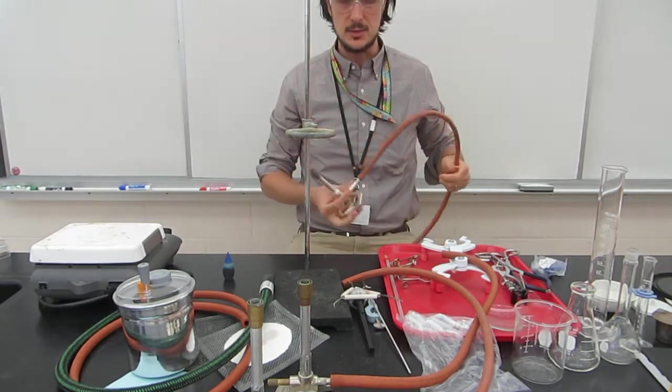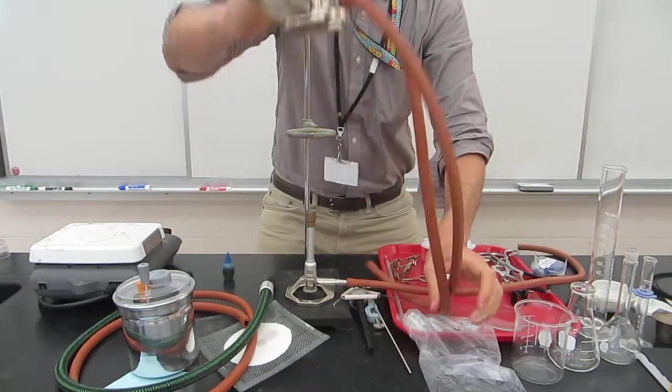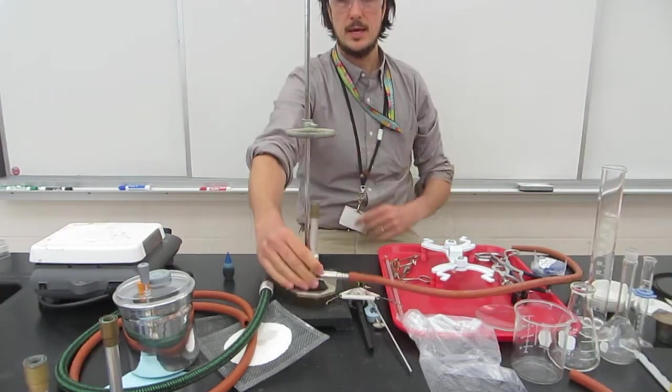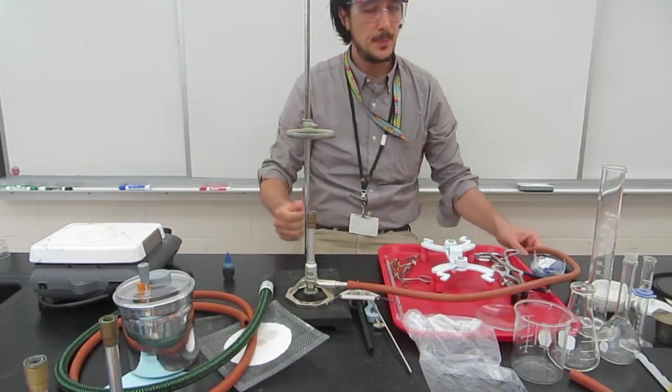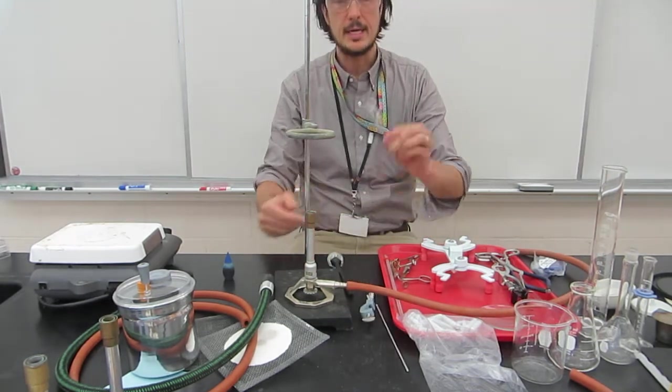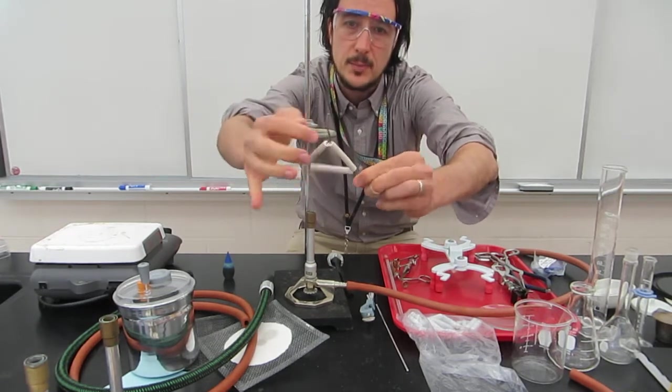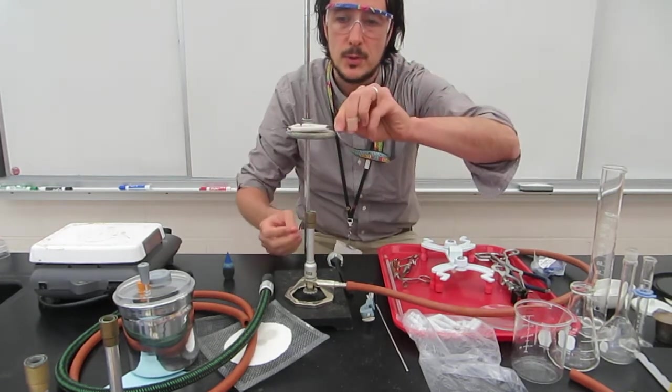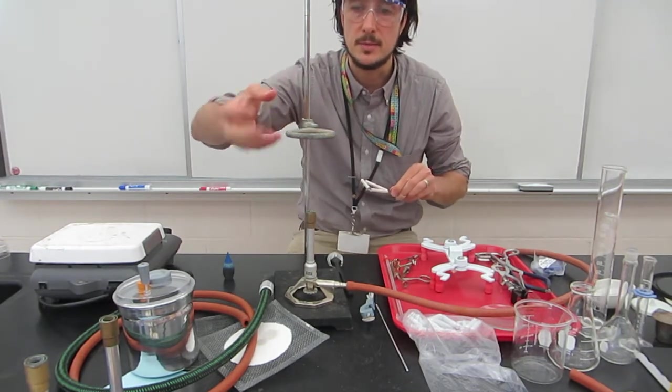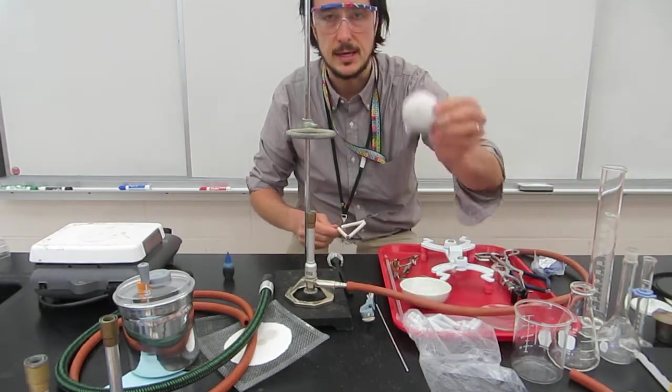These are some different Bunsen burner designs or gas burner designs. Let's say you had it set up, you have a ring stand set up, and what might you do with this? You'd use a clay triangle. You can see it is a triangle and we've got pieces of ceramic here. You want to put this on top. You don't want to put something directly on the metal because the metal heats up and cools down at different rates compared to ceramics.